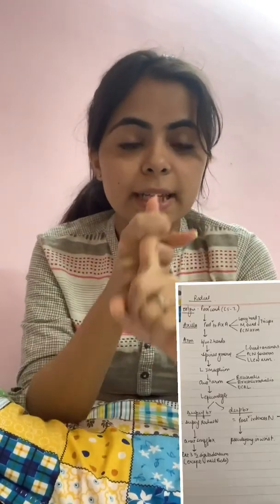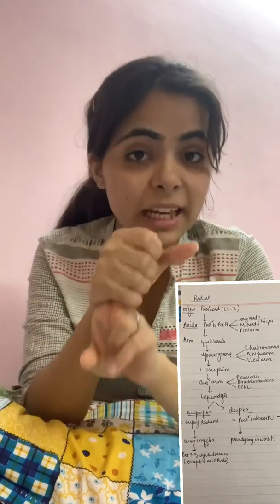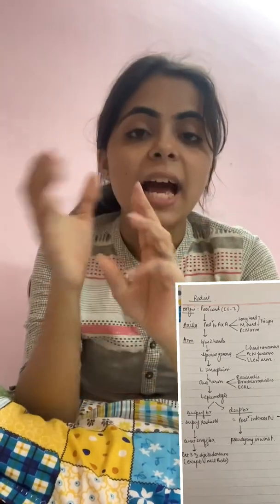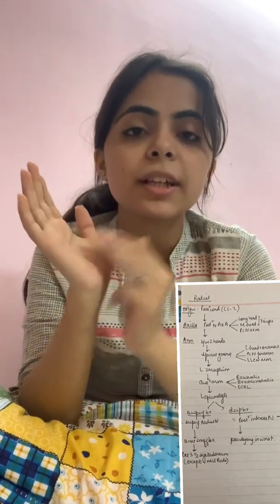to the medial head of the triceps, and the posterior cutaneous nerve of the arm. The posterior cutaneous nerve of the arm supplies from the shoulder down till the elbow.